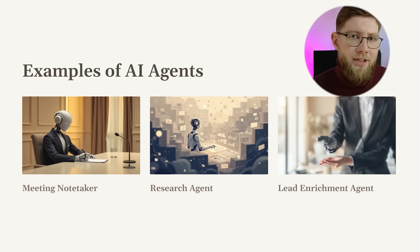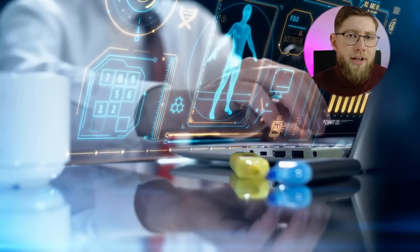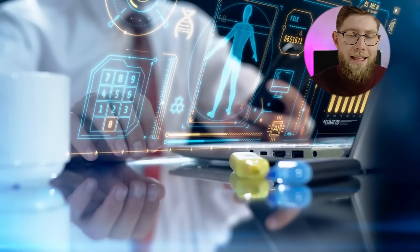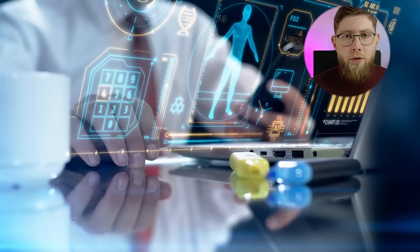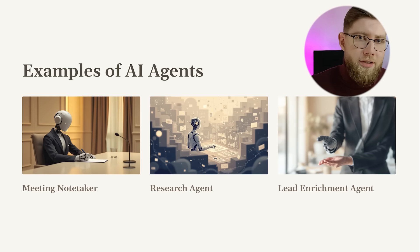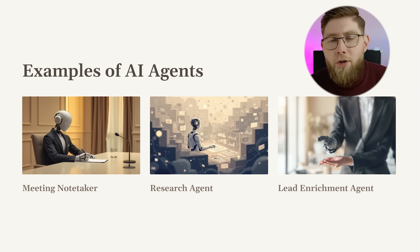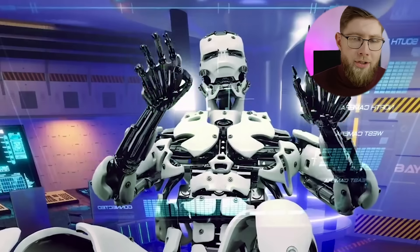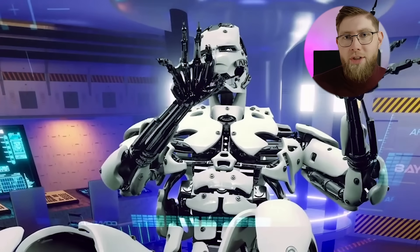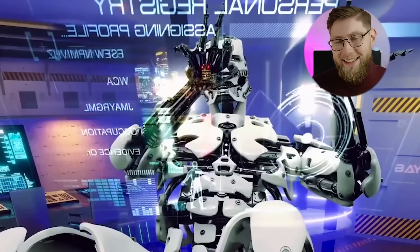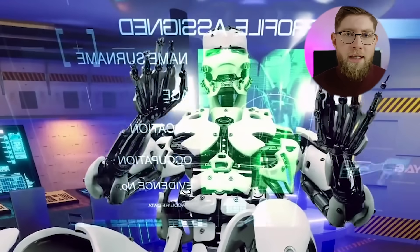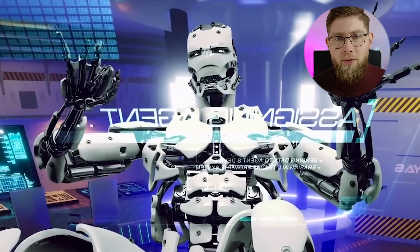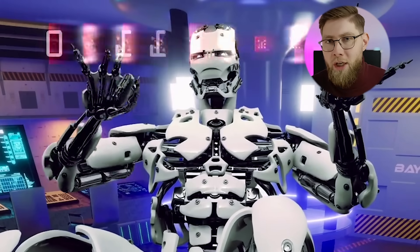Third, lead enrichment agent — this is very common. With access to different APIs, an AI agent can perform research given just a lead email, searching LinkedIn and Google to add additional information such as job position, job title, current company, and so on. Fourth, lead outreach agent — an agent with access to Gmail can automatically compose and send emails. You can automate the full flow: say someone requests a demo at your company, the AI agent can handle that request, respond to that lead, and send an invitation to a demo session.